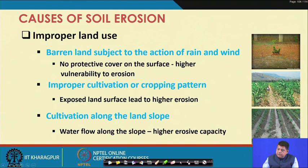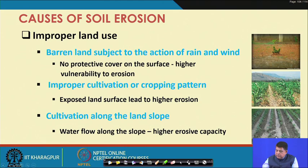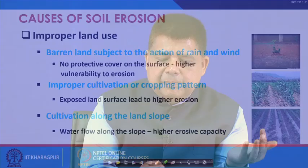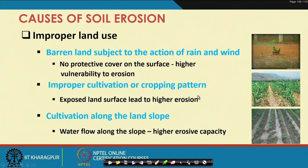When exposed surface areas allow water flow, there are higher chances of erosion. Another form of improper land use is cultivation along the land slope — in between rows there is space for water flow, and because of the slope this flowing water has very high velocity and higher kinetic energy with greater erosive capacity. So any improper land use — barren land, improper cultivation, or cultivation along slopes — makes soil susceptible to erosion.